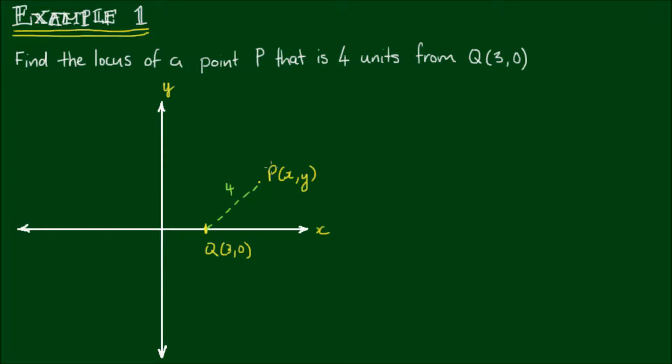And straight away, intuitively, we should know what this locus is going to be. Because if P must be at a distance of 4 from Q, then P is restricted to the edge of a circle that is of radius 4 centered at Q. Now that's a very wobbly circle, but you get the idea.